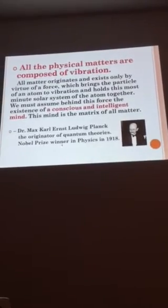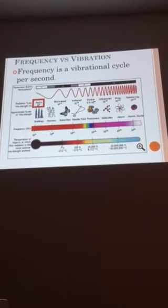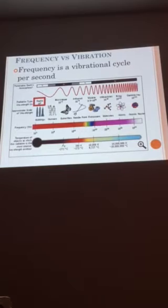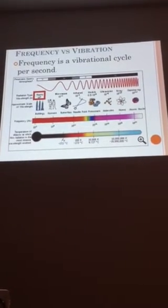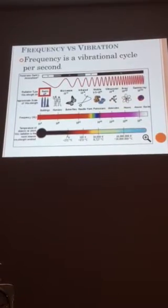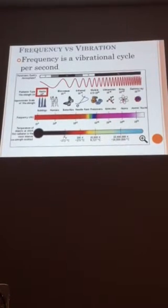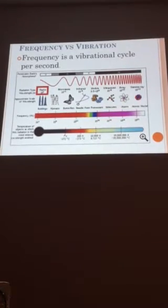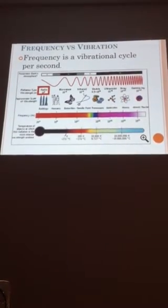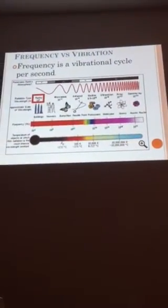This is basic vibration in the quantum level. Everybody uses the frequency rather than vibration in this area. So what is the difference between vibration and frequency? Frequency is the vibration cycle per second. That's frequency. Basically, same term by using the frequency, and that one is a vibrational cycle per second.